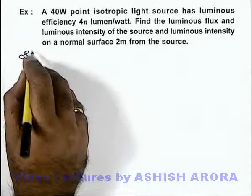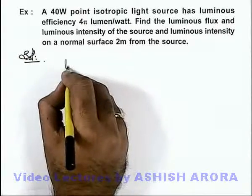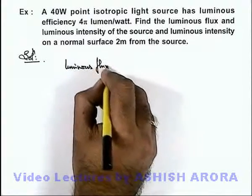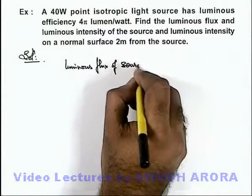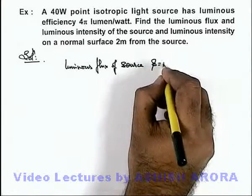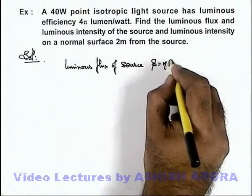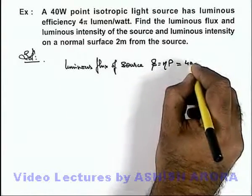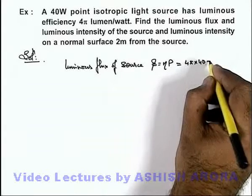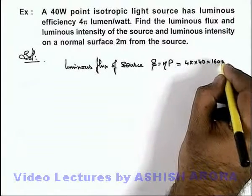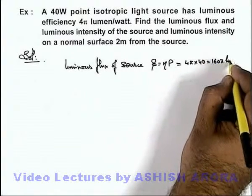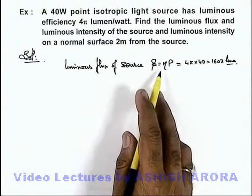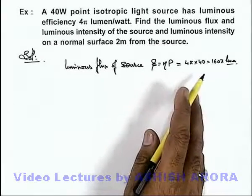In this situation, we can write directly that luminous flux of the source, φ, equals luminous efficiency multiplied by the radiant power. So here, this is 4π multiplied by 40, which gives us 160π lumens. That is the luminous flux from the source — luminous efficiency multiplied by radiant flux.